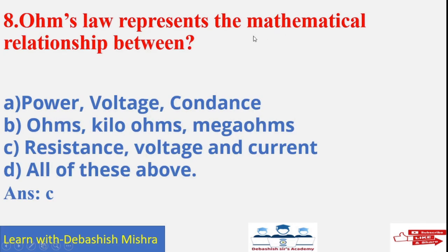Ohm's law. Ohm's law represents the mathematical relationship between power, voltage, conductance, ohm, kilo ohm, mega ohm, resistance, voltage and current, all of these above. Resistance, voltage and current because we know that V is equals to IR.